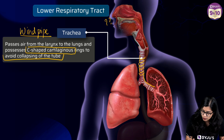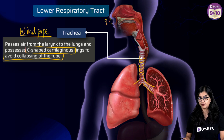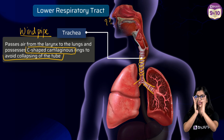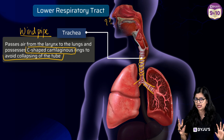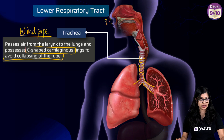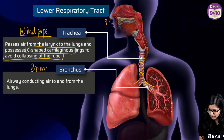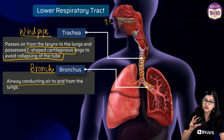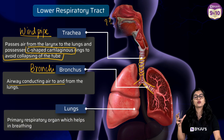From here, the trachea bifurcates into two — it branches like a tree trunk branching out — forming structures called bronchus, plural bronchi. The bronchi are airways that conduct air into the primary respiratory organ, which is the lungs.